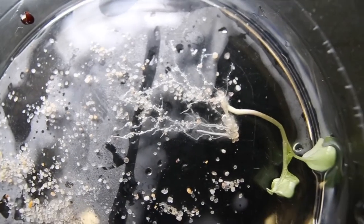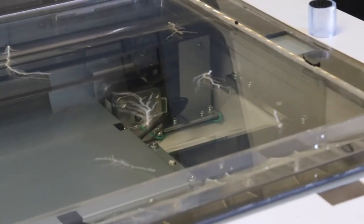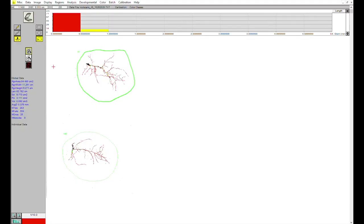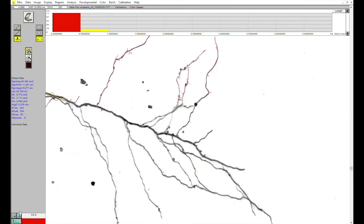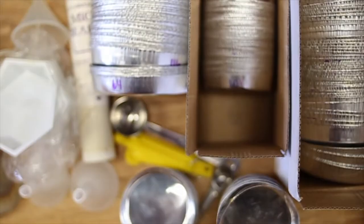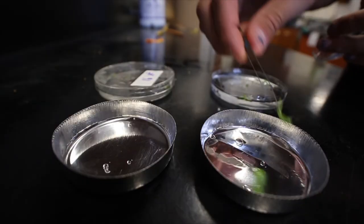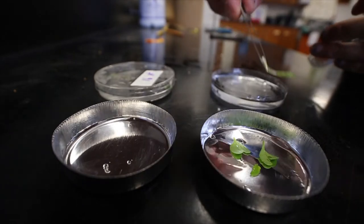This allowed us to quantify a number of parameters, such as the total length of roots and the average root diameter. Once they were scanned, each plant was placed in a drying oven for three days before being weighed for dry weight biomass.